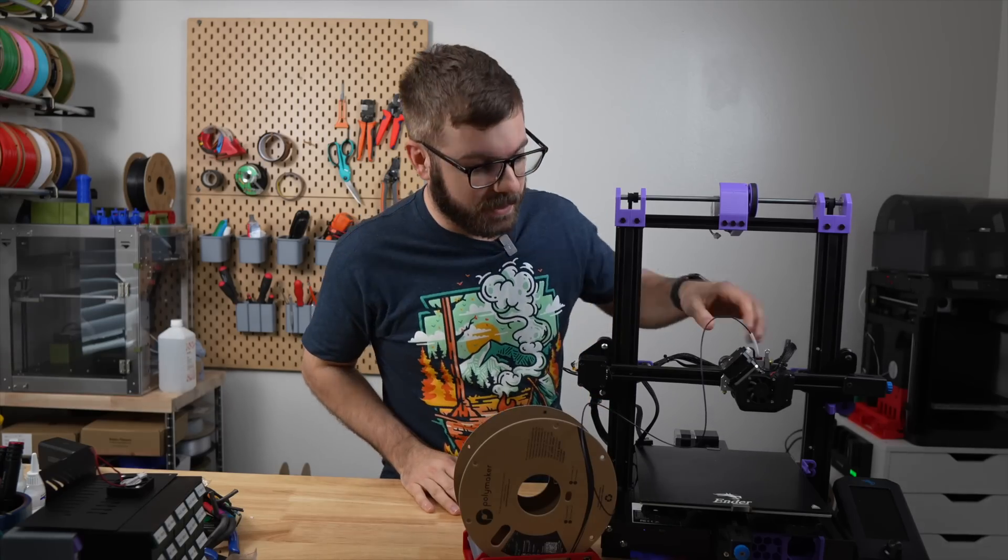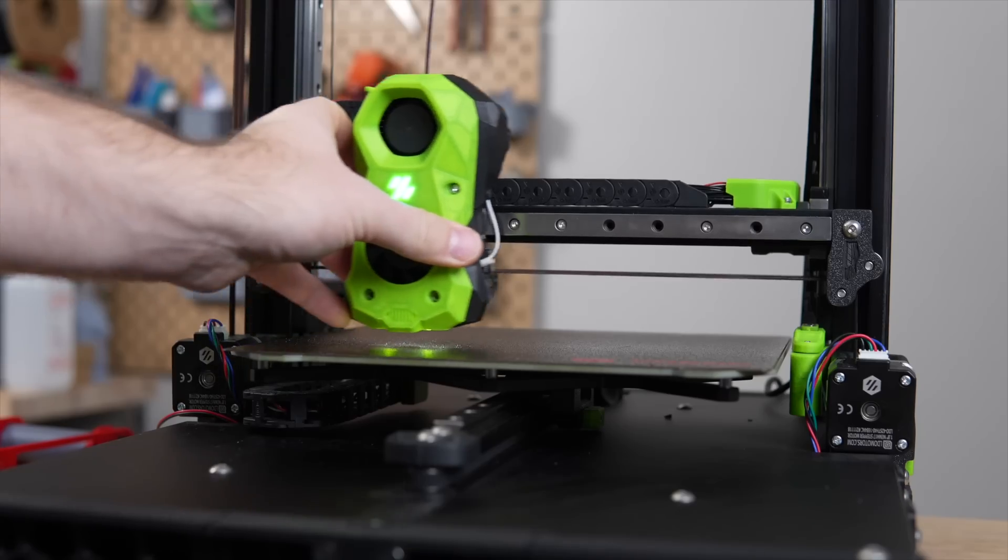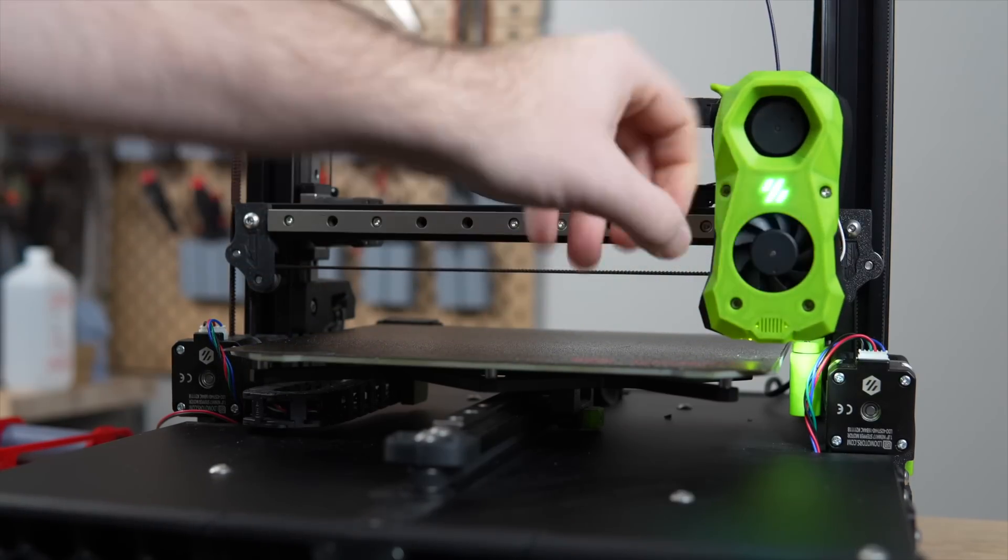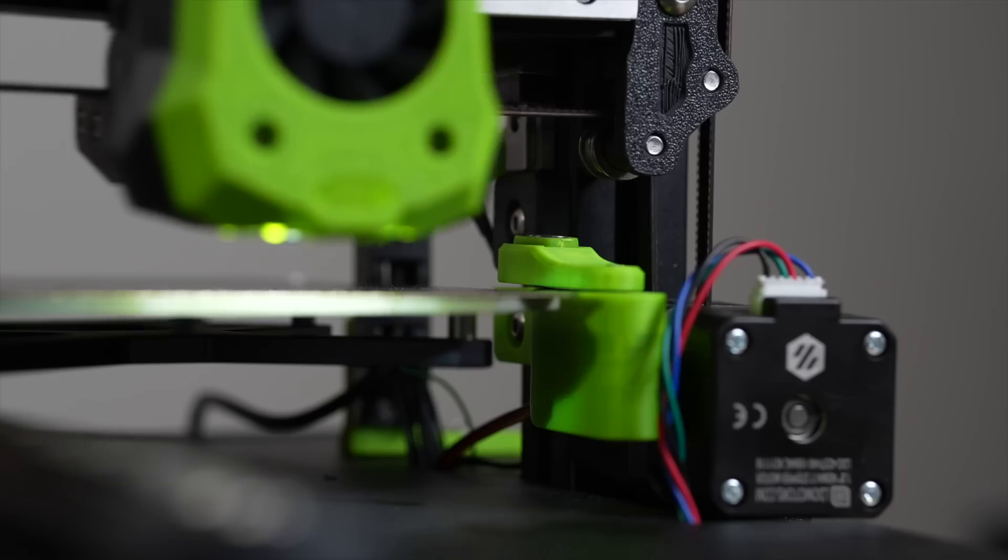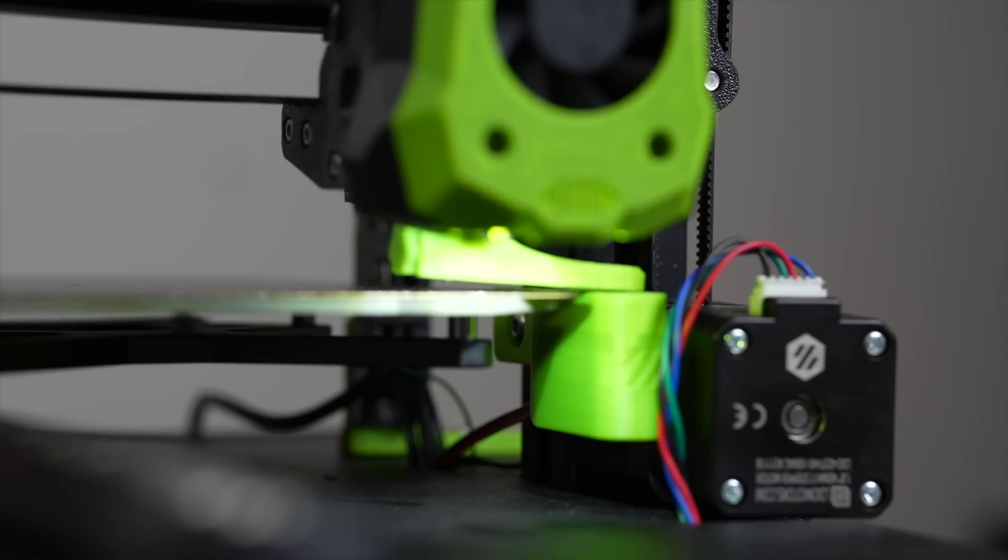Because on i3 printers, you typically can't get the toolhead completely off of the build plate, most of the time you're going to be losing build volume with the Clicky or you're going to need something like a servo, which is what I use on my Voron switchwire.